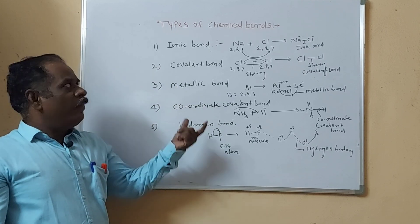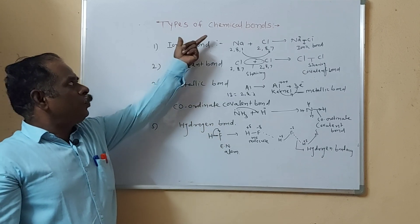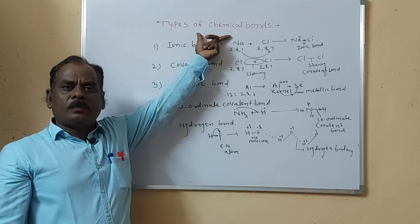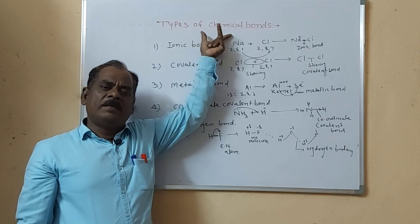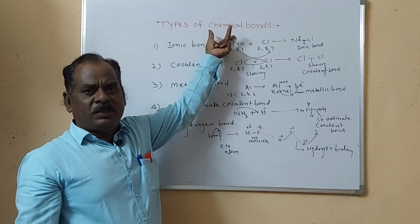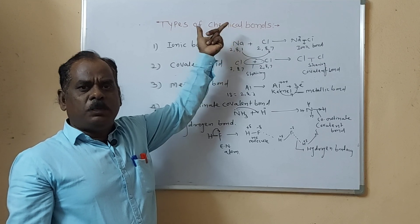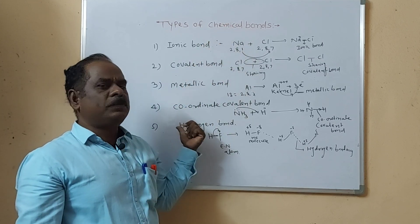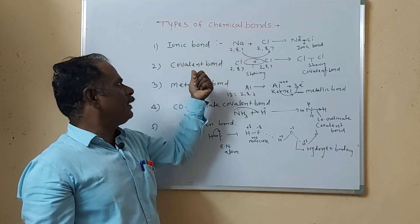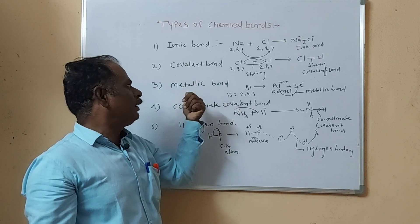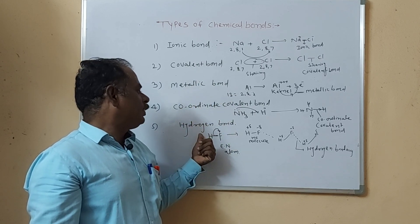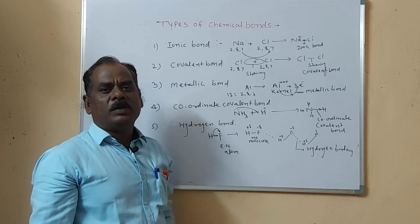Today I will teach you the topic of chemical bonding. These bonds are mainly classified into five types: first is the ionic bond, second is the covalent bond, third is the metallic bond, fourth is the coordinate covalent bond, and fifth is the hydrogen bond.